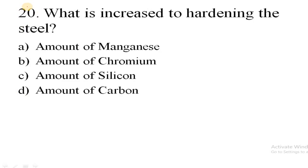What is increased to harden the steel? Now the correct answer is amount of carbon. Actually a small amount of carbon is added to the steel so that we can make use of it and make utensils and all. So this is the end of our discussion.